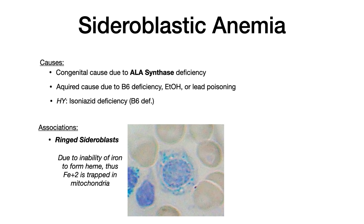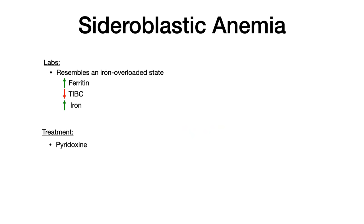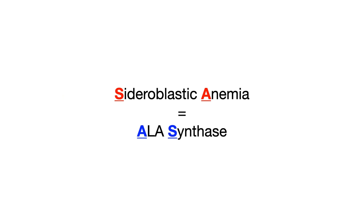Bottom line for sideroblastic anemia: congenital due to X-linked ALA synthase deficiency; acquired because of lack of the B6 cofactor, usually due to isoniazid. Labs resemble an iron-overloaded state — increased ferritin, decreased or normal TIBC, increased iron. Treatment is pyridoxine. The mnemonic: sideroblastic anemia initials are SA — SA backwards is AS, for ALA synthase.